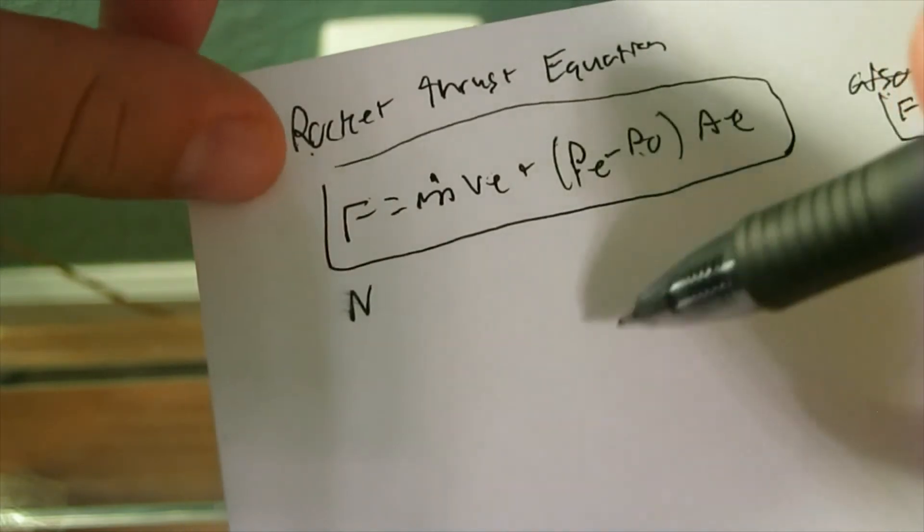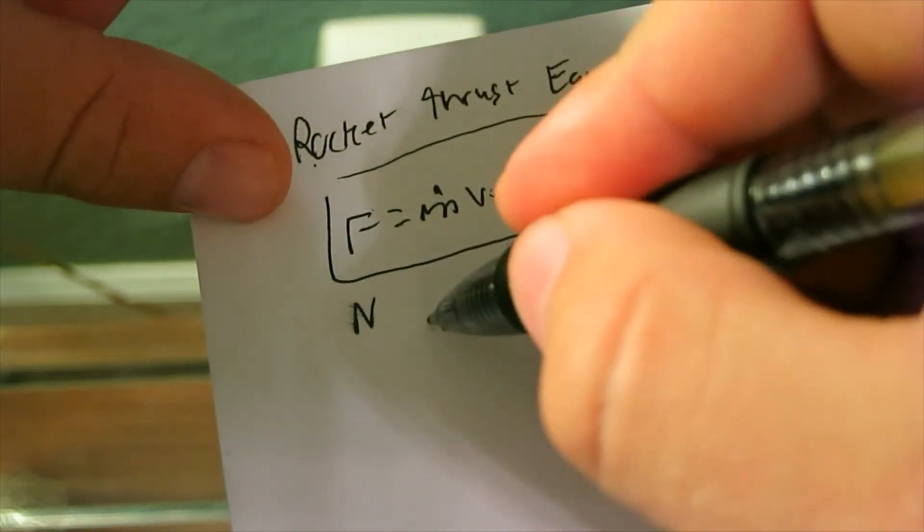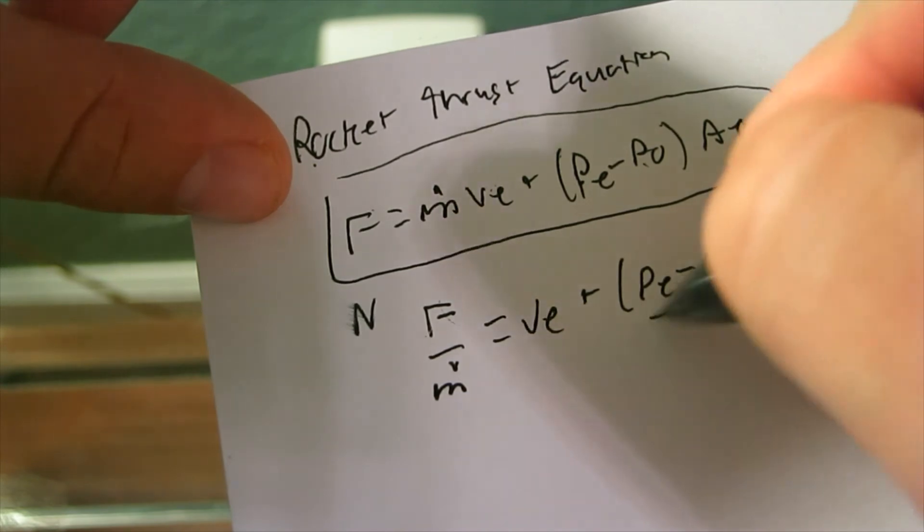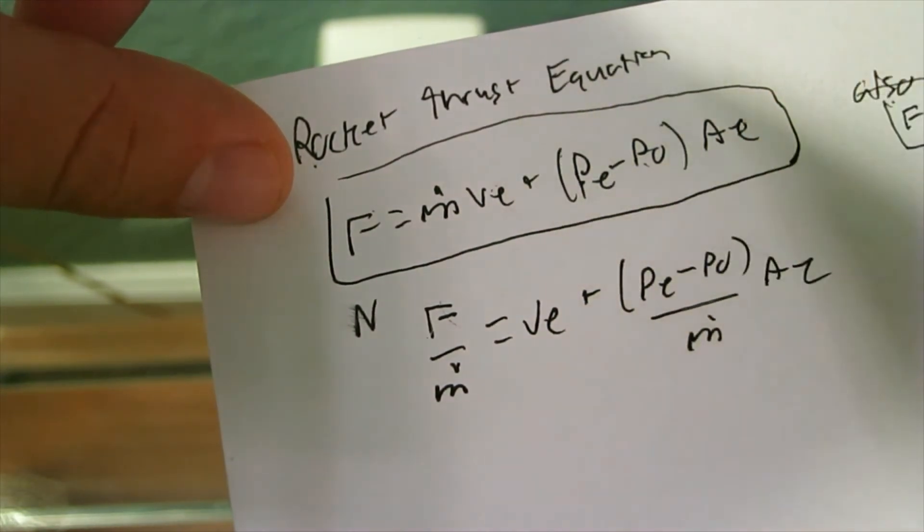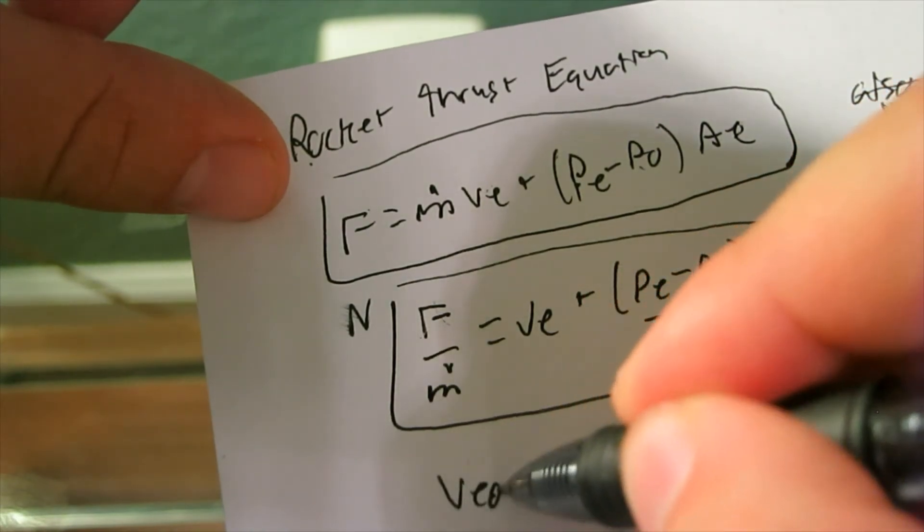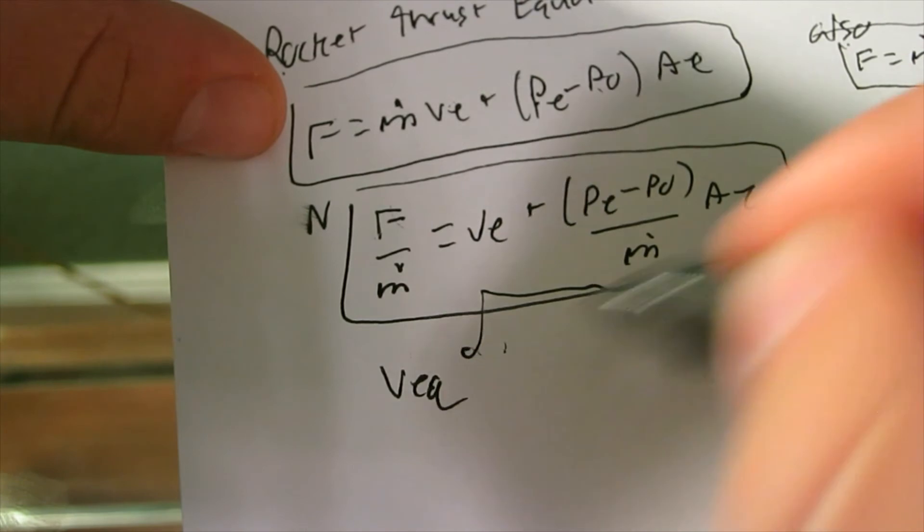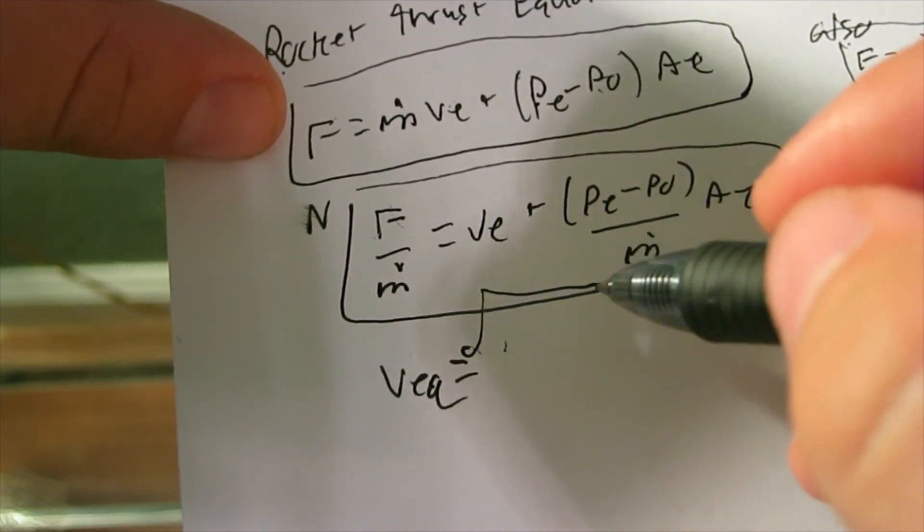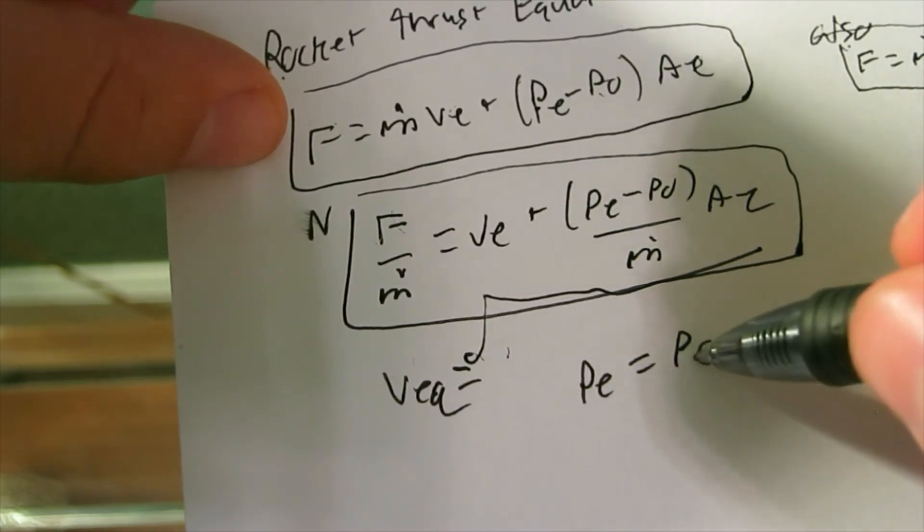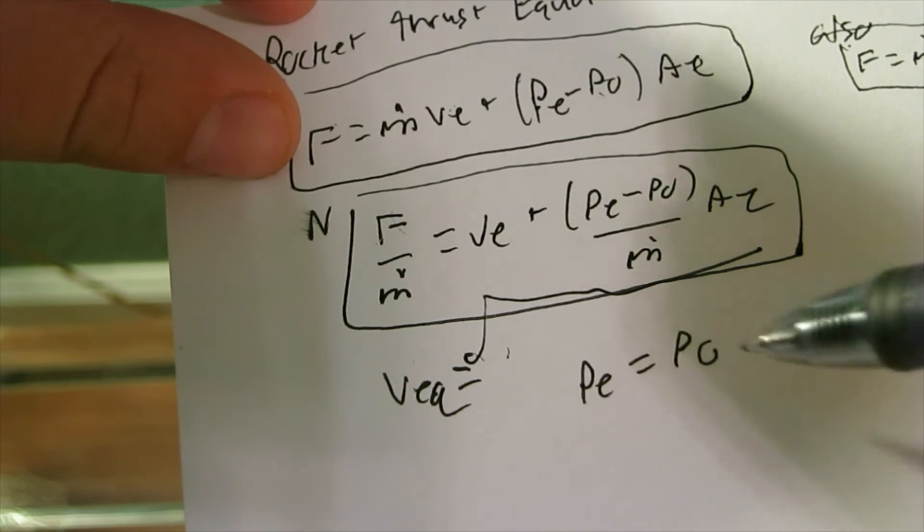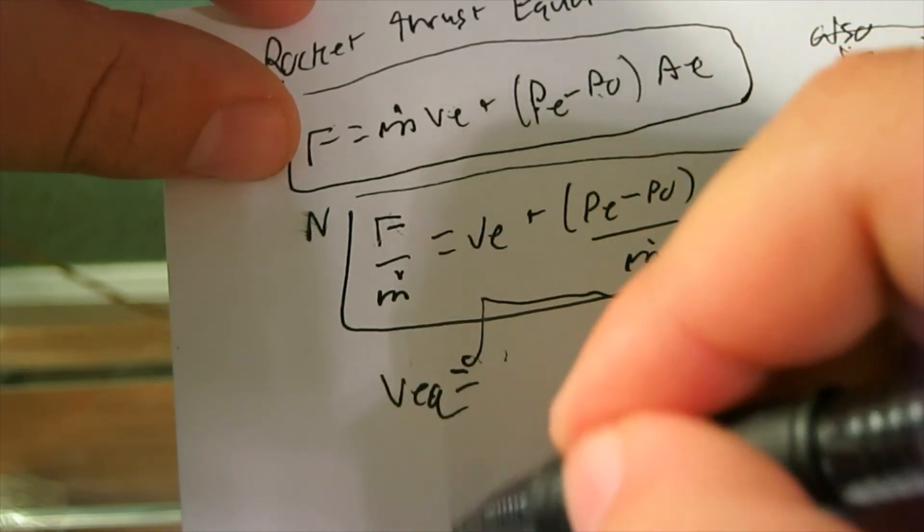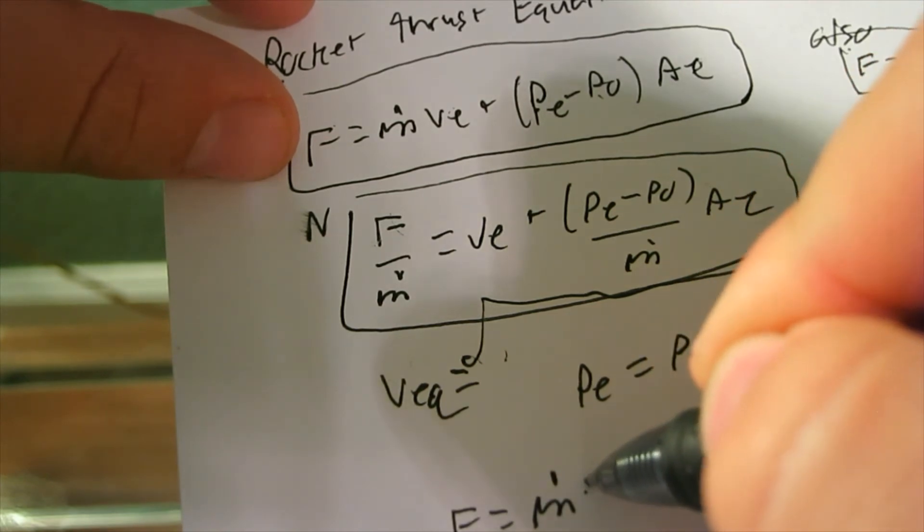If we divide this whole equation by the mass flow rate, we're left with force divided by mass flow rate equals velocity at the exit plus the pressure difference. And then this equation right here, this is the equivalent velocity. So VEQ equals this right here. If the PE equals P0, this perfectly expanded nozzle, where the pressure at the exit is the exact same as the pressure of the ambient air, this reduces to just the force of thrust equals M dot times velocity equivalent.